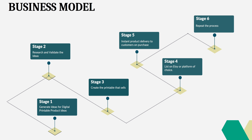The first stage of the business model is to generate ideas for your digital printable products. Once you have ideas, you need to research and validate them — this is a very key stage because you don't want to put in all the effort creating a product that doesn't sell. Next, create the printable in a format people are looking for. Then list it on Etsy or any platform of your choice. When customers make a purchase, they get an instant download. Finally, repeat the process to keep making money.